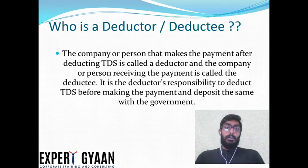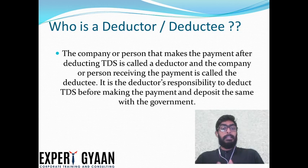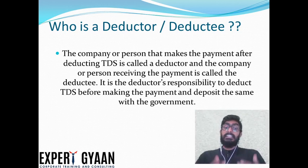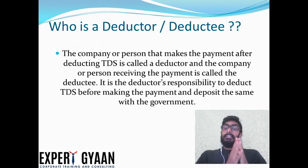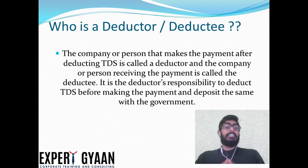Who is the deductor and who is the deductee? The company or person that makes the payment after deducting TDS is called a deductor. TDS is deducted and the payment is made — that person or entity is called a deductor.